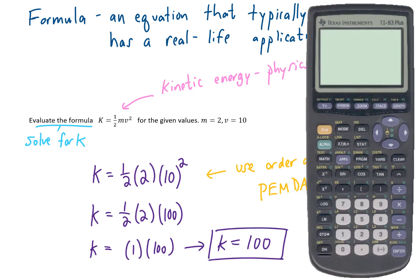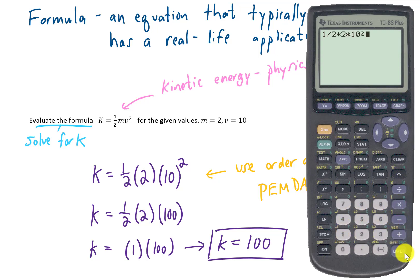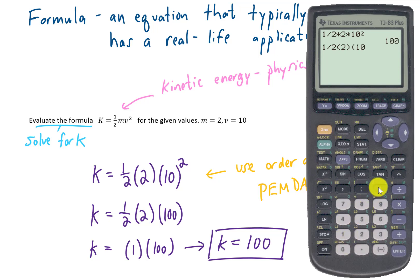Another option is to use a calculator and let it handle the order of operations. Type in one-half, multiply by 2, then multiply by 10 squared, and it gives 100. You can also enter it as one-half times (2) times (10)^2 using the caret symbol for the exponent — both methods give the same answer.